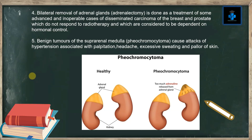Benign tumors of the suprarenal medulla — phaeochromocytoma — cause attacks of hypertension associated with palpitation, headache, excess sweating, and pallor of skin.